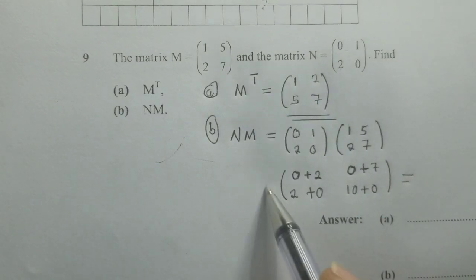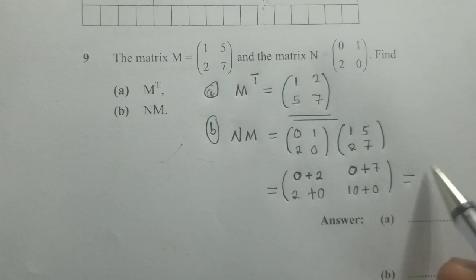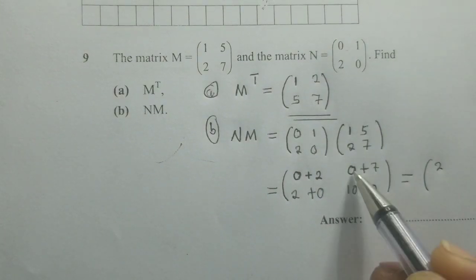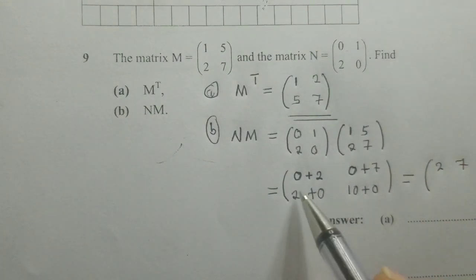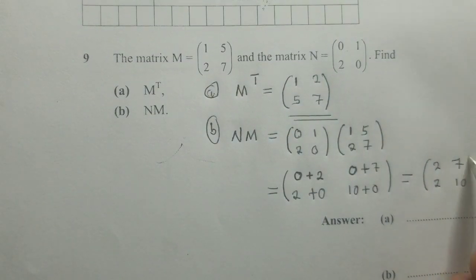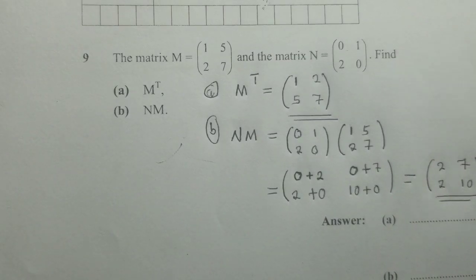So the next thing here will just be to simplify. 0 plus 2 is 2. 0 plus 7 is 7. 2 plus 0 is 2. 10 plus 0 is 10. And this is our solution for question B.